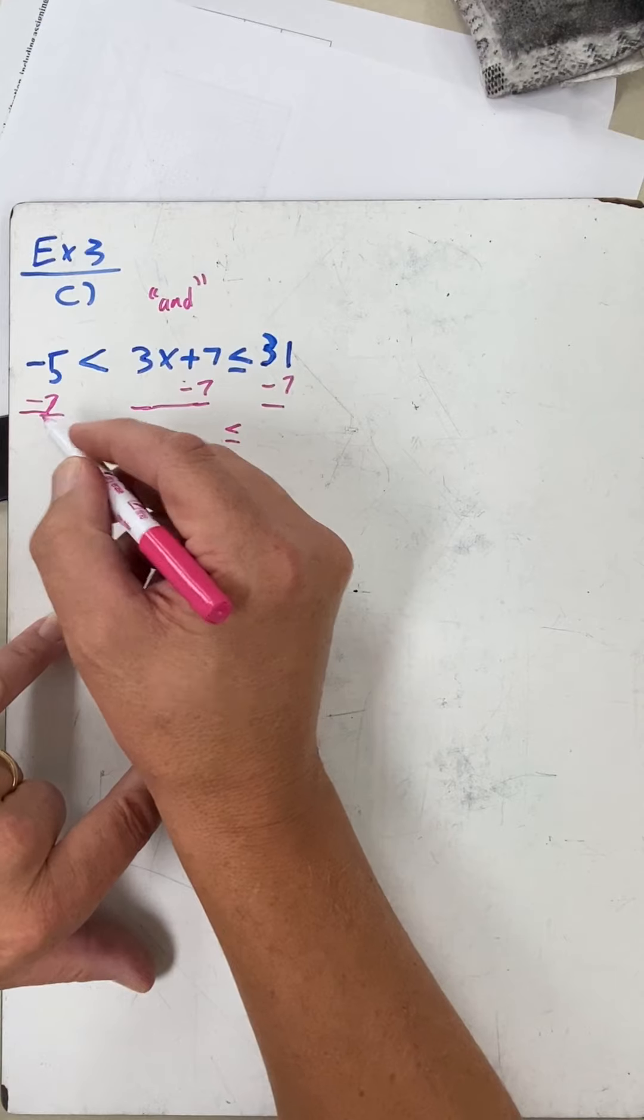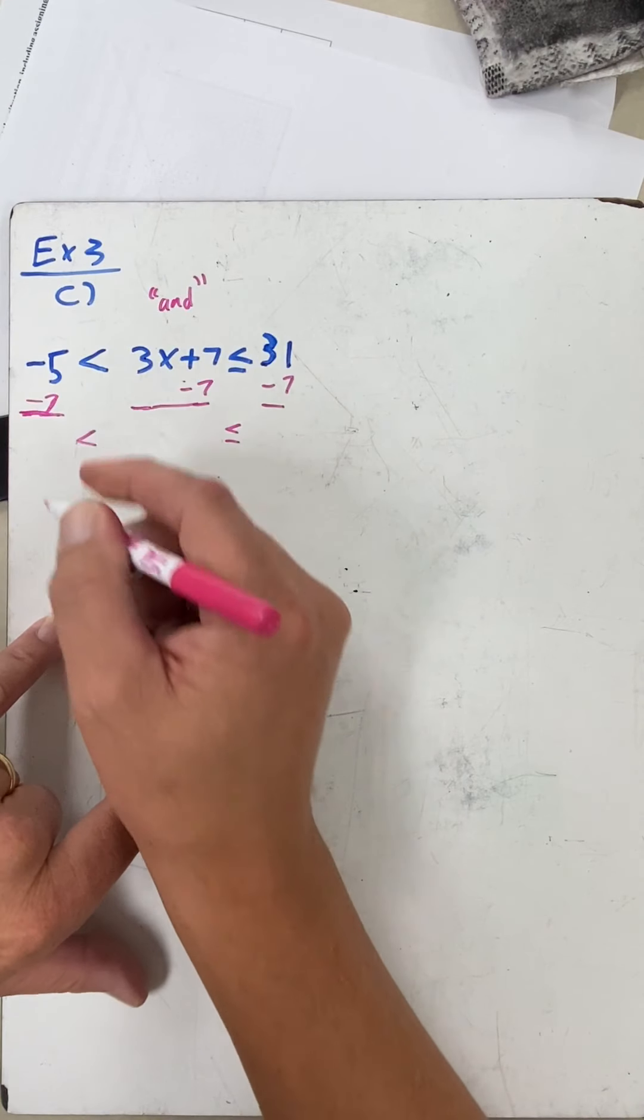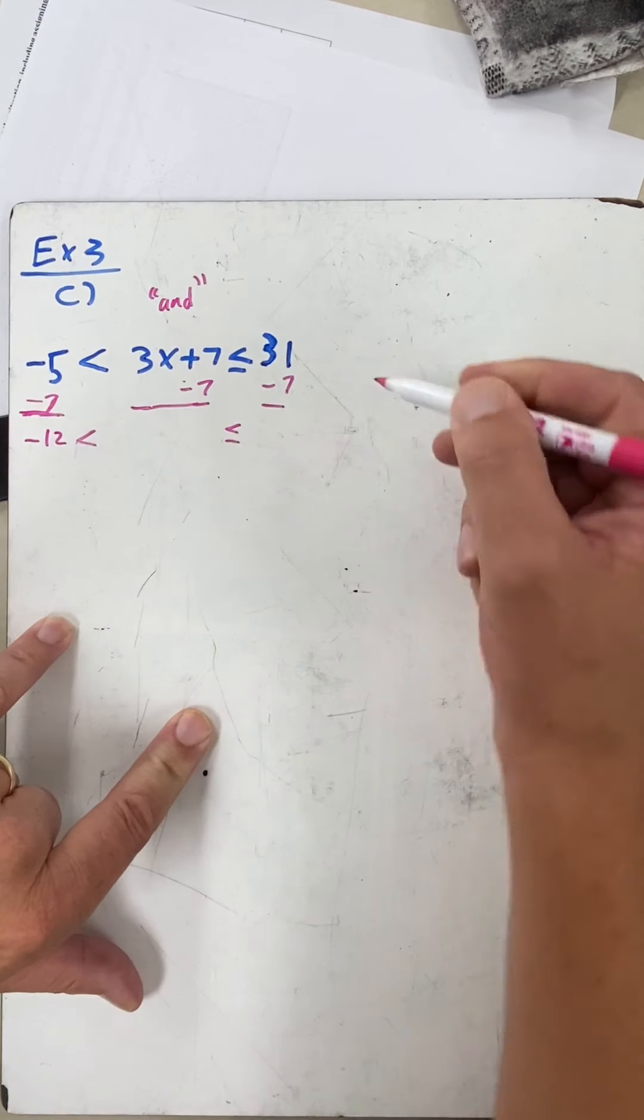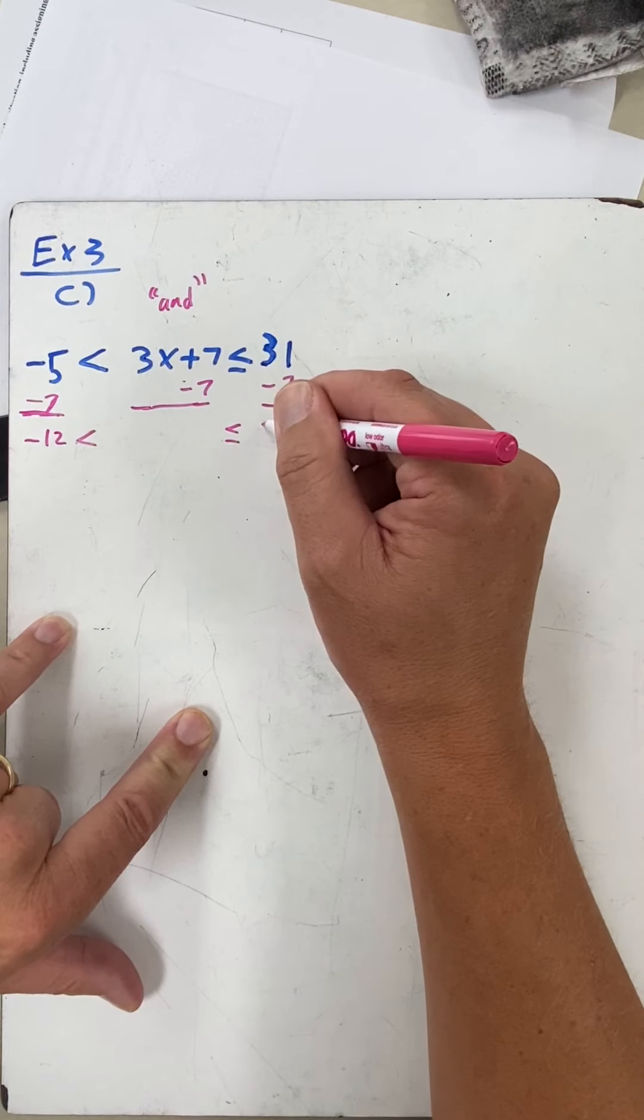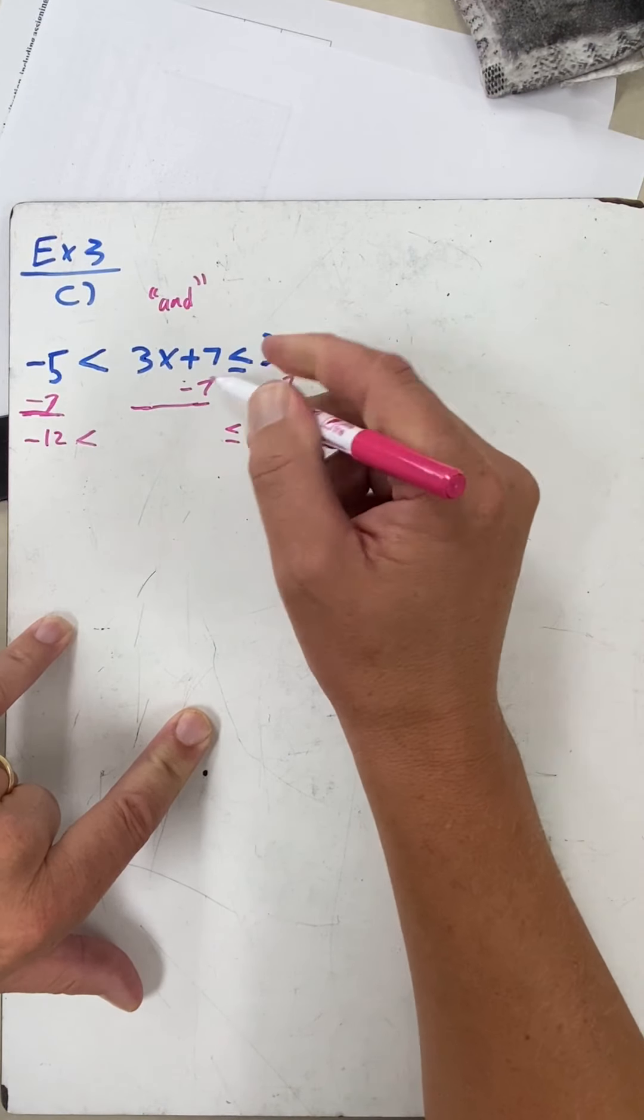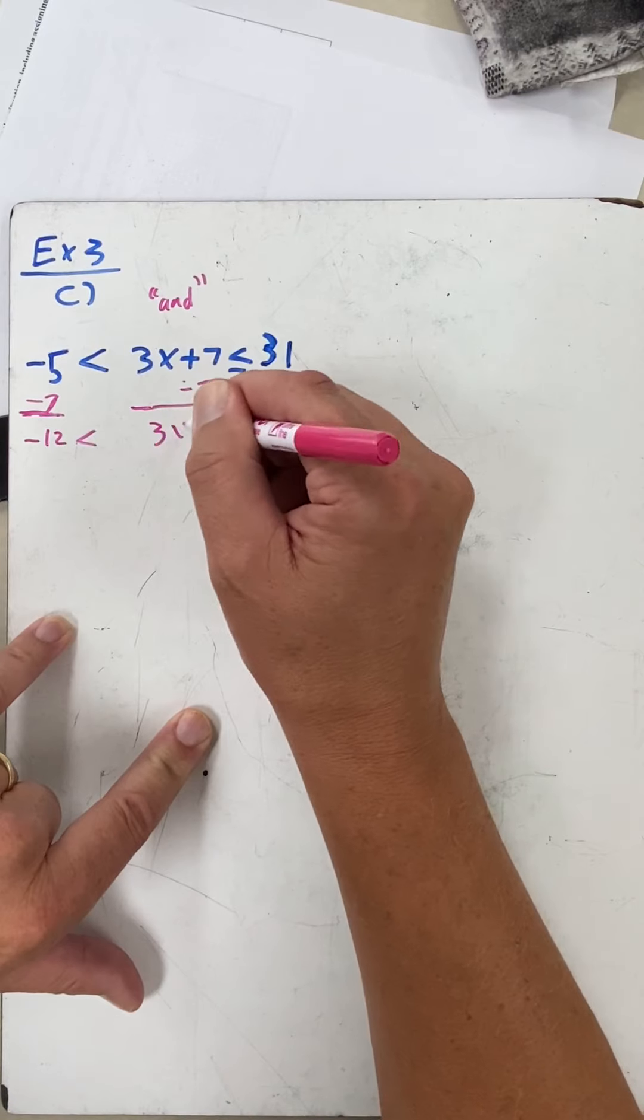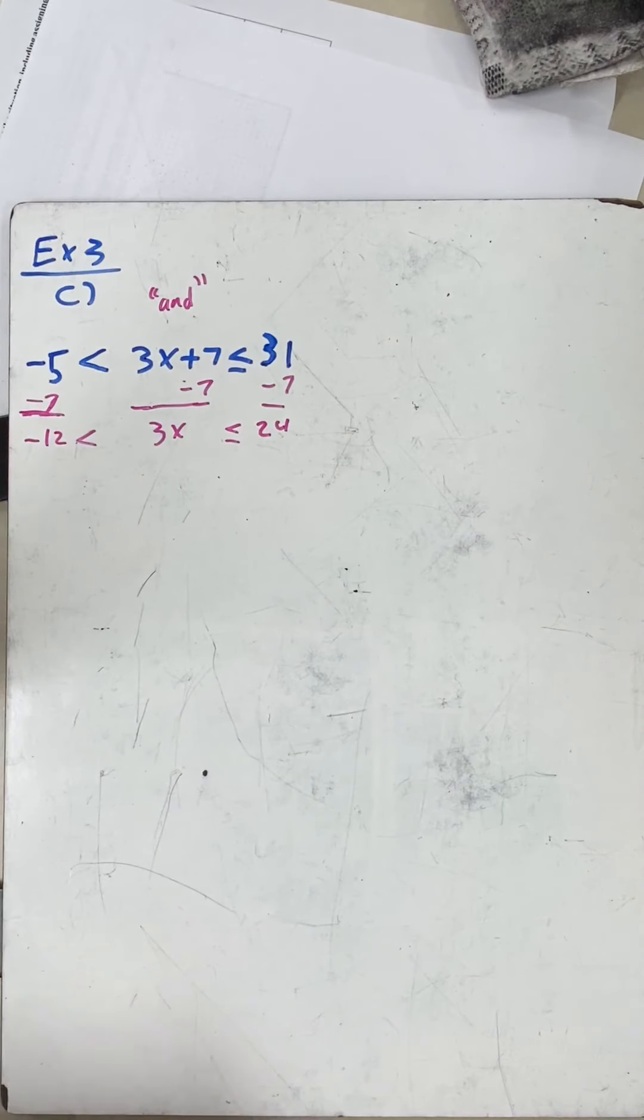Now over here I have negative five minus seven—that's a negative seven, remember—is negative twelve. Thirty-one minus seven is twenty-four, and here the sevens cancel. We're left with 3x. Now we're almost done solving this one.